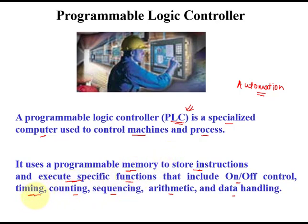Counting means counting the number of jobs on a conveyor. Sequencing means following certain steps for a machine or process — also called a sequencing operation. Arithmetic functions include addition, subtraction, multiplication, division, trigonometric functions, and matrix functions. Data handling means copying, manipulating, and processing data. So PLC supports all these functions: on/off control, timing, counting, sequencing, arithmetic, and data handling.